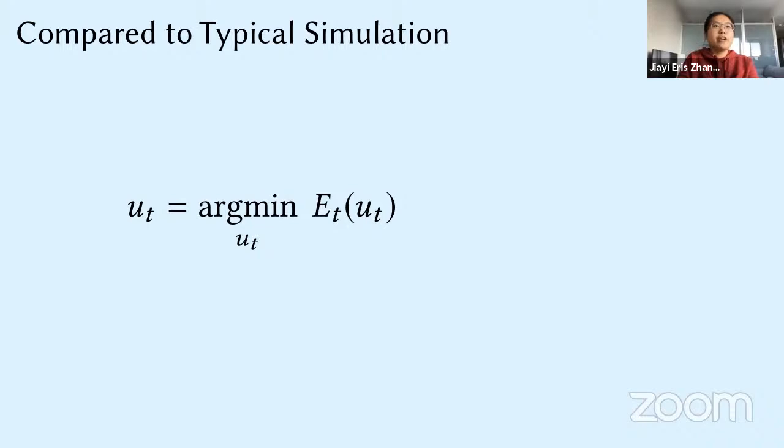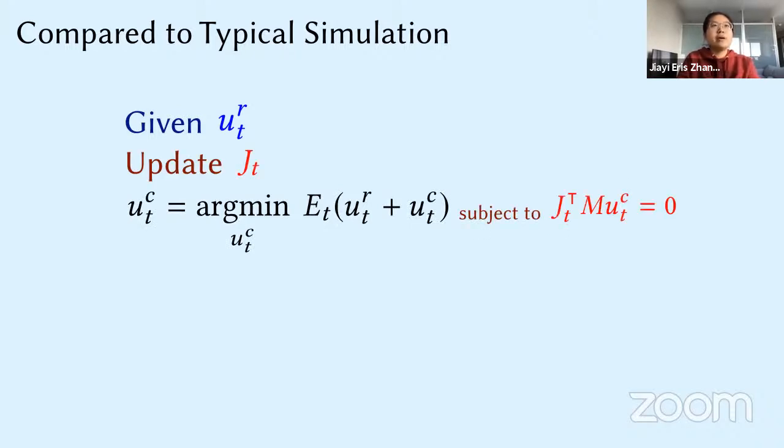And compared to typical simulation, for each frame, you are given the rig displacement. And then you do change of variable. And you update the local Jacobian matrix, and solve a constraint optimization problem instead. And finally recover your final displacement. Such simple.